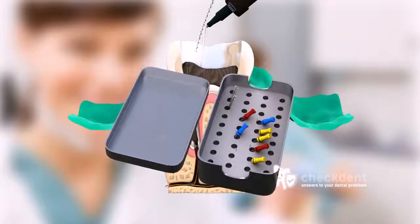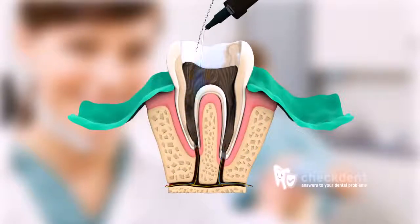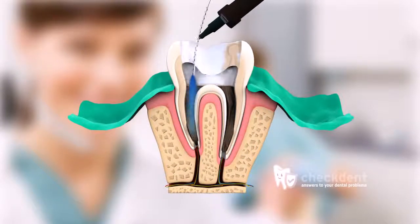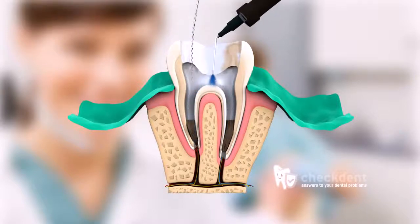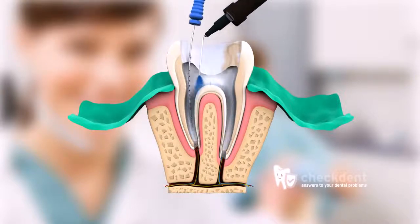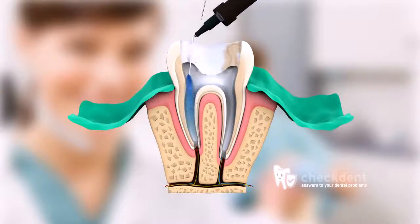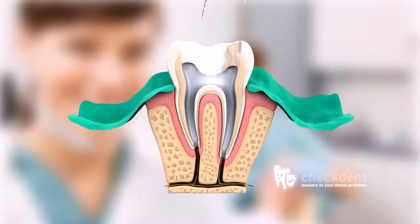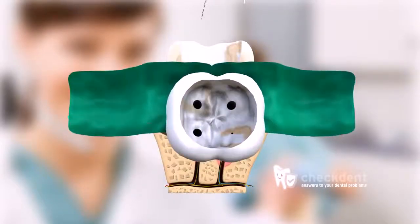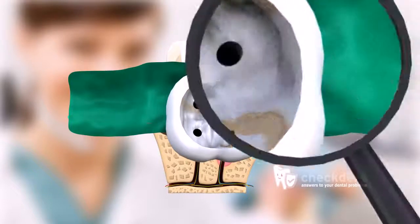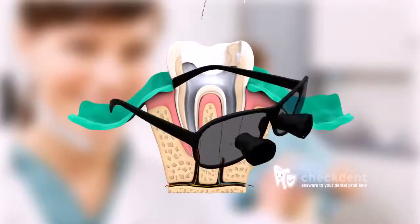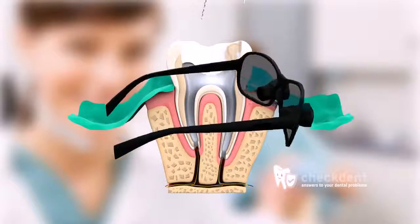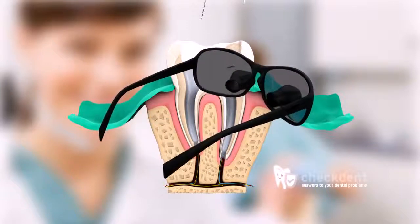With the aid of sterile instruments, the dentist begins to clear and clean the interior of the tooth. Special solutions are used intermittently for irrigation in order to flush out tooth chips, cell debris, and bacteria. It's important that all canals are reconditioned, as most teeth have several canals. Therefore, a root canal specialist, a so-called endodontic specialist, always works with magnification, such as medical magnifying glasses or a microscope.